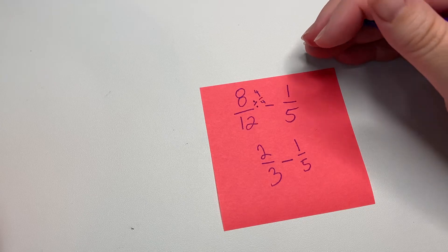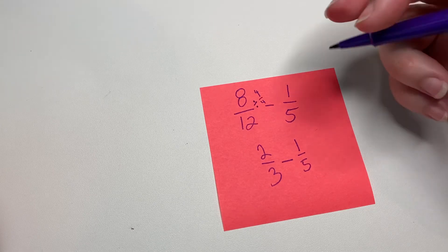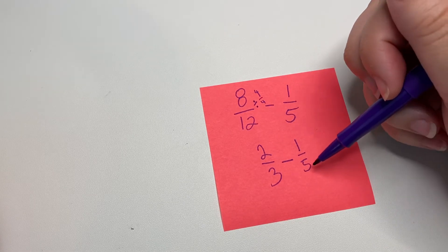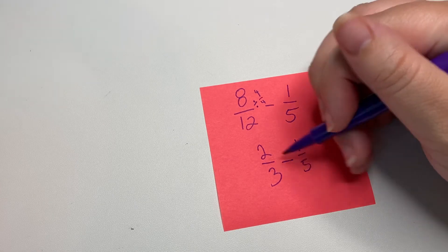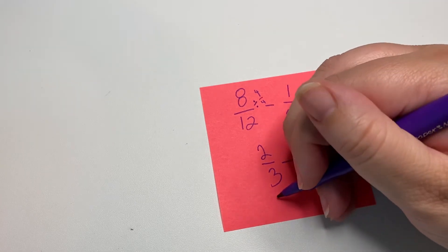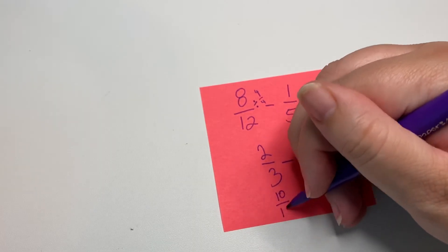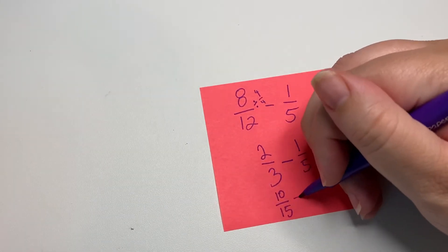Now we can't just subtract here, so we have to get a common denominator like we were talking about before. So, and I'm doing it a little bit shorthand of a way at this point, but I'm going to do 5 times 2 and 5 times 3. So 5 times 2 is 10, 5 times 3 is 15. I don't have to...